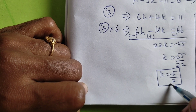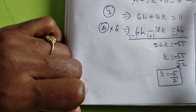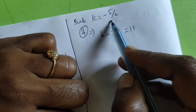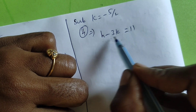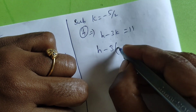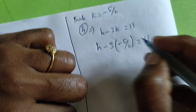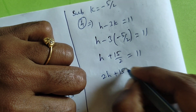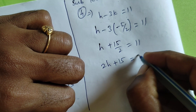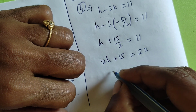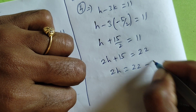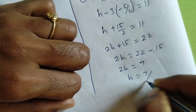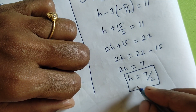Now substitute k = minus 5/2 into equation 4: h minus 3k equals 11, so h minus 3 times (minus 5/2) equals 11, giving h plus 15/2 equals 11. Multiplying through by 2: 2h plus 15 equals 22, so 2h equals 7, and h equals 7/2. We have now found h and k.